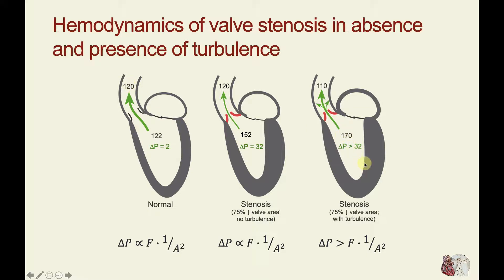But if we also have turbulence occurring — which we will under this condition with one-fourth valve area — then this delta P is going to be greater than 32, because we get that departure from linearity between delta P and flow. Now we might have a situation where the left ventricular pressure needs to be 170 millimeters of mercury. The aortic pressure may drop to 110, giving a 60 millimeter of mercury gradient across the valve instead of 32 — the difference simply being the addition of turbulence.